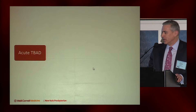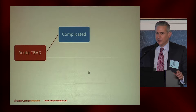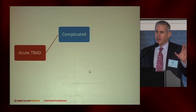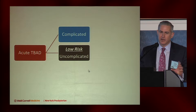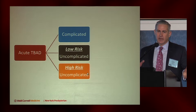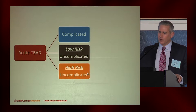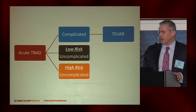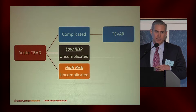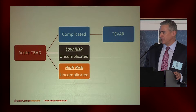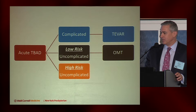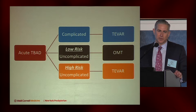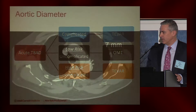Looking at all comers with acute type B aortic dissections, you have to break them down into groups. Clearly, complicated patients are going to need intervention. But for uncomplicated type B aortic dissections, we really have to try to group them into low risk or high risk for complications. Complicated patients get TVAR. Low-risk patients should continue to be treated medically. The trick is identifying those at high risk, because those are probably the subset that will benefit from TVAR up front.